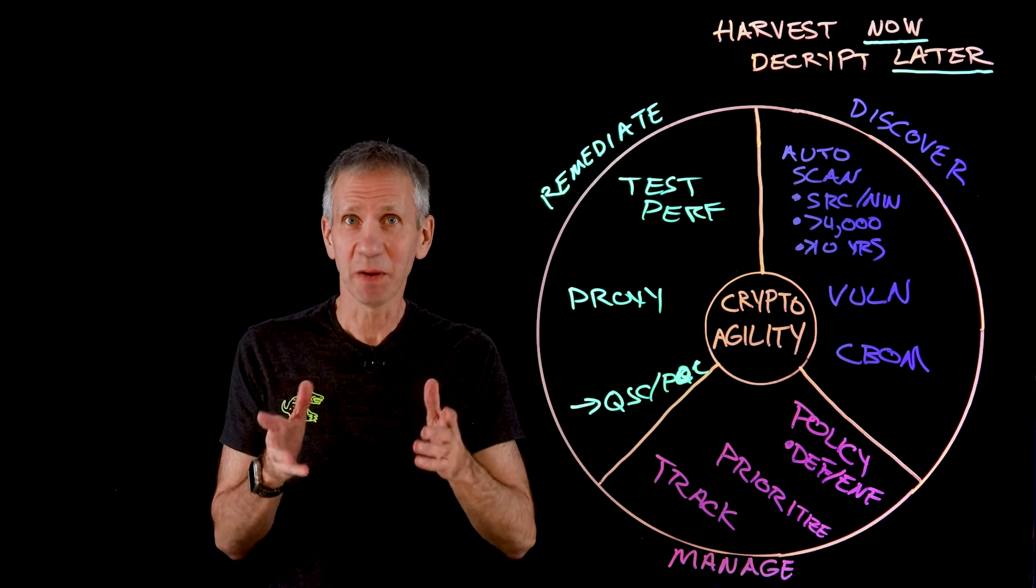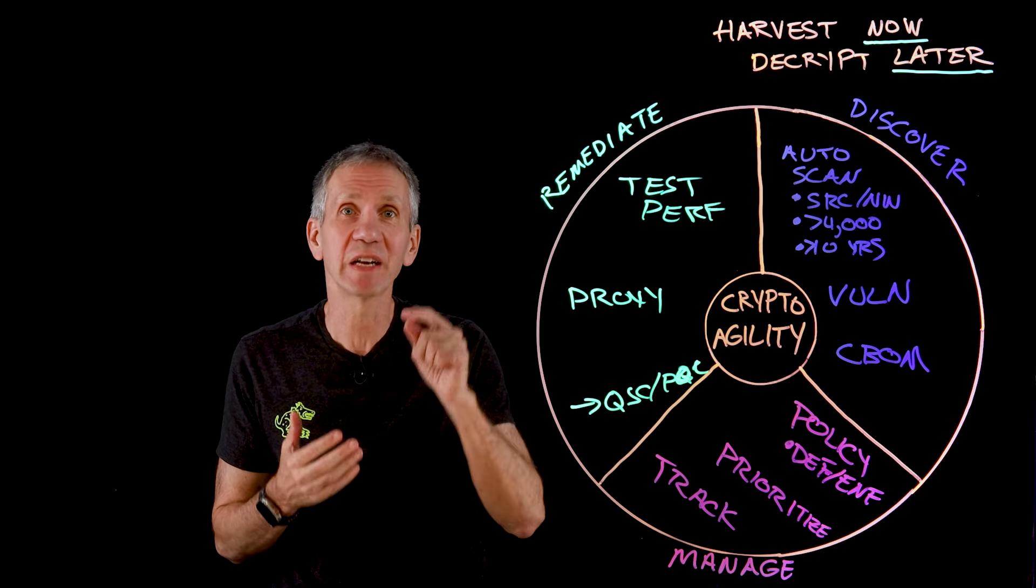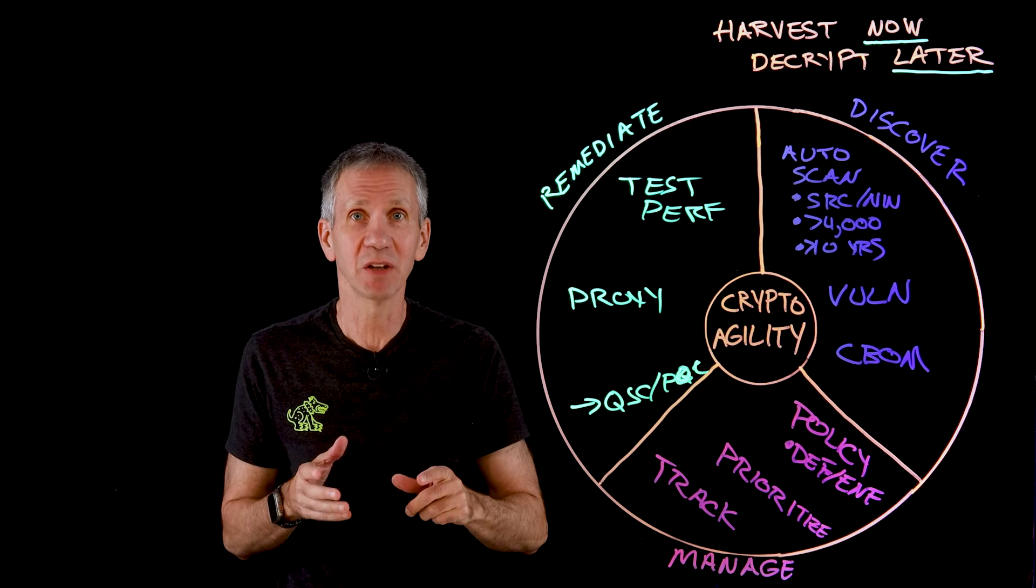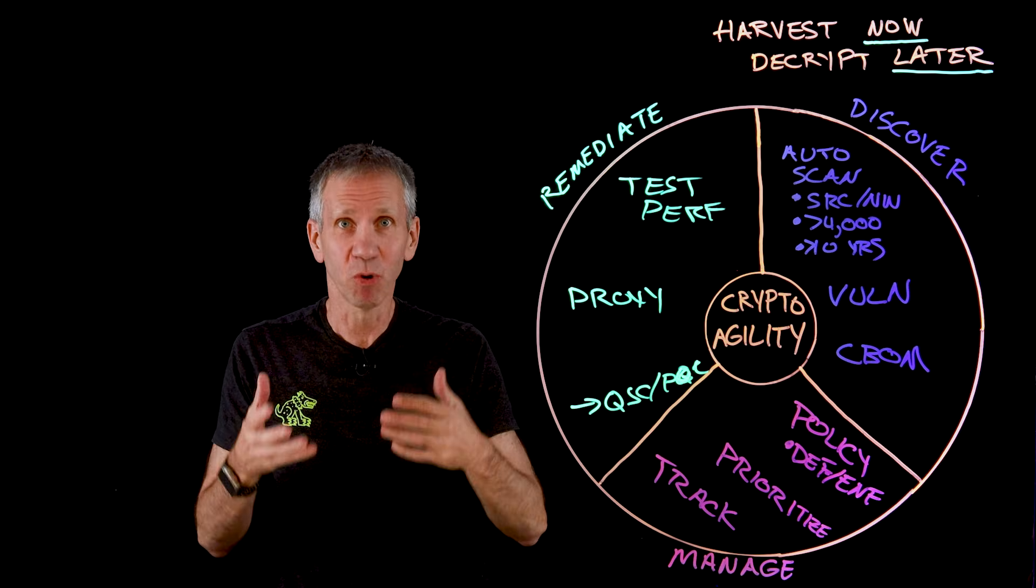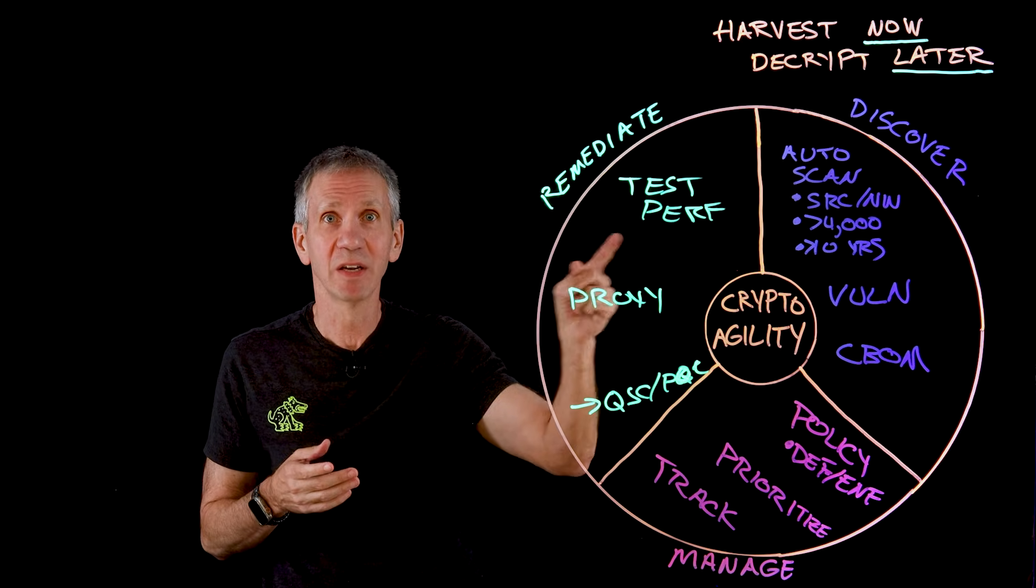You can't go back in time to prevent past cases of harvesting of your encrypted data. But you can start now on the path to crypto agility. With the right people, process, and technology, you can mitigate the risk of harvest now decrypt later, at least until you build that time machine.